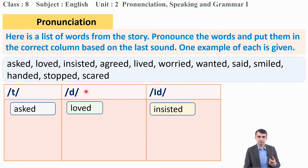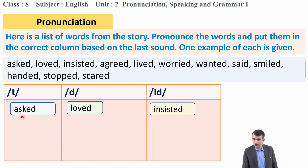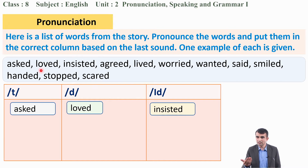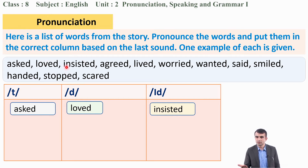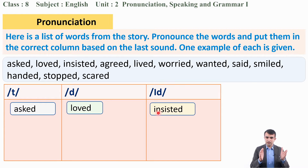For example, the first three words are already classified. 'Asked' — the final sound is /t/, so it comes under /t/. 'Loved' — try saying it: loved. The final sound is /d/, so it comes under /d/. 'Insisted' — try pronouncing it: insisted. The final sound is /id/, so it comes under the /id/ column. Now classify all the remaining words under these three final pronunciations.